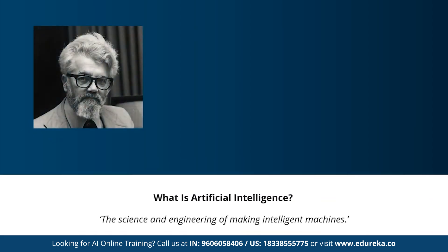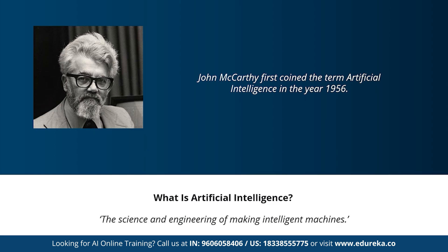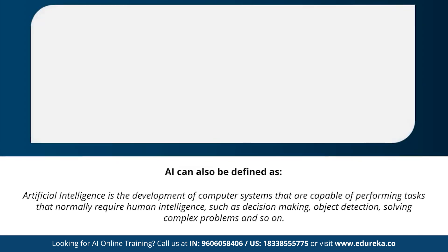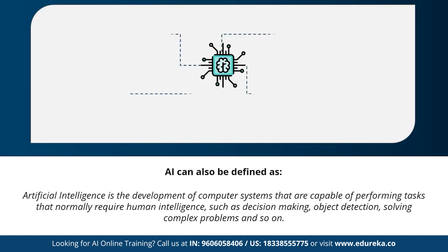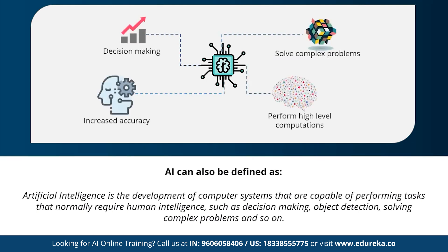The term artificial intelligence was first coined by John McCarthy, who defined AI as the science and engineering of making intelligent machines. In other words, AI can be defined as the development of computer systems capable of performing tasks that require human intelligence, such as decision making, object detection, and solving complex problems. Artificial intelligence helps in decision making, solving complex problems, performing high-level computations, and increasing the accuracy of predictions. These are the main features of AI.